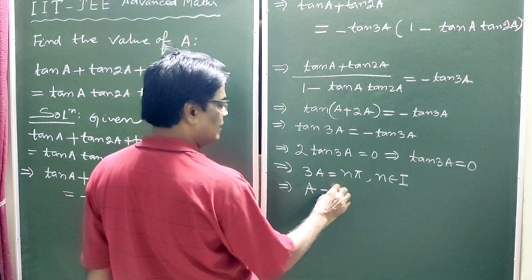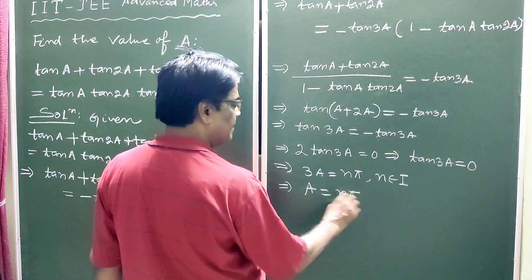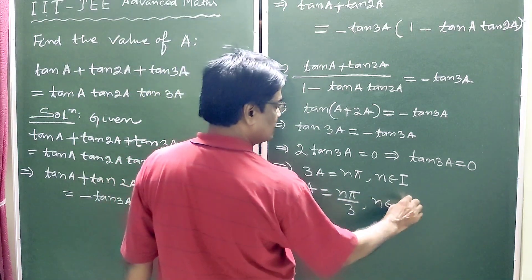This implies A equals n pi by 3, n belongs to I.